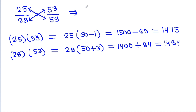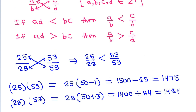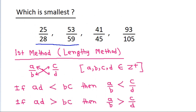That means 25/28 will be less than 53/59. So 53/59 cannot be the smallest.